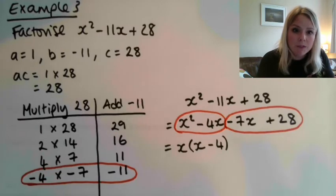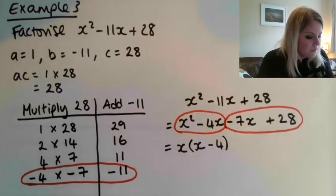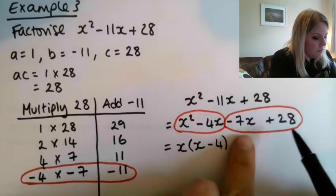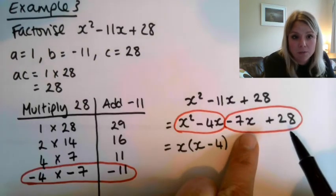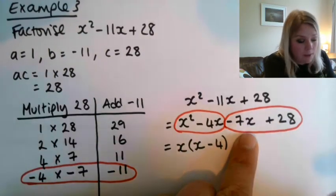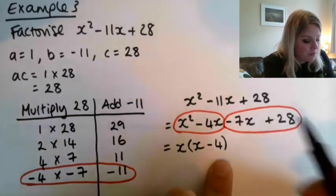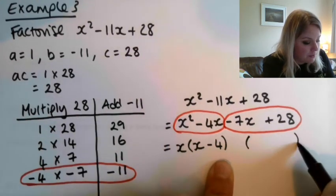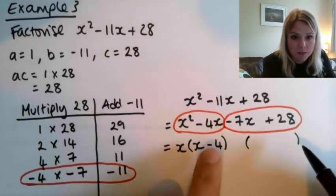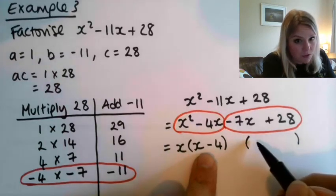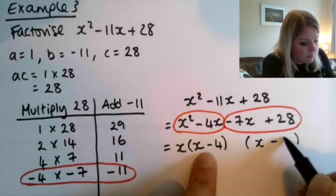Now remember, whenever we're doing this sort of second step of factorizing, we're looking to see what is common to both of these terms to bring out. But we want the thing that's left in the bracket to be the same as this one here. So I'm going to just automatically write that in. I want it to be x minus 4.